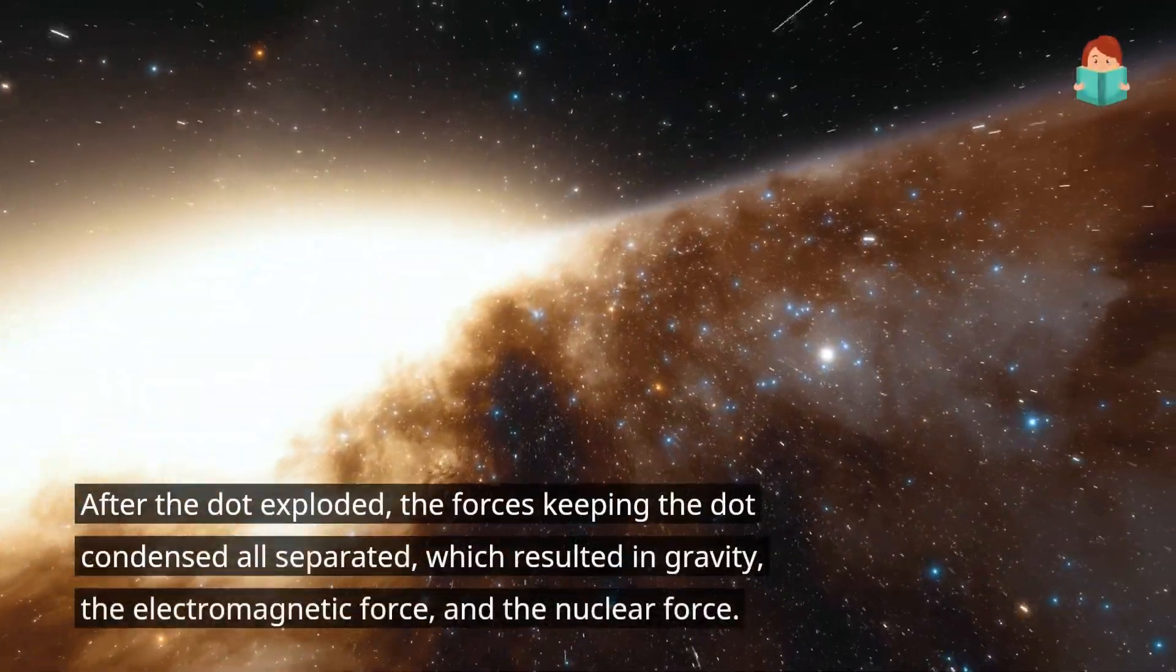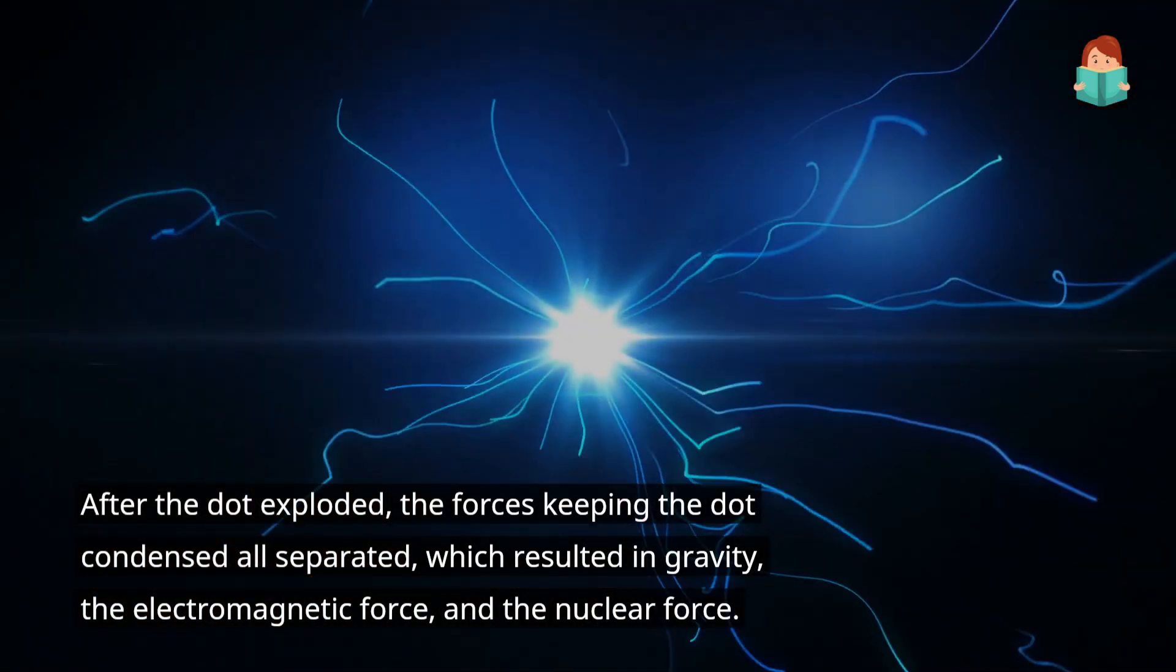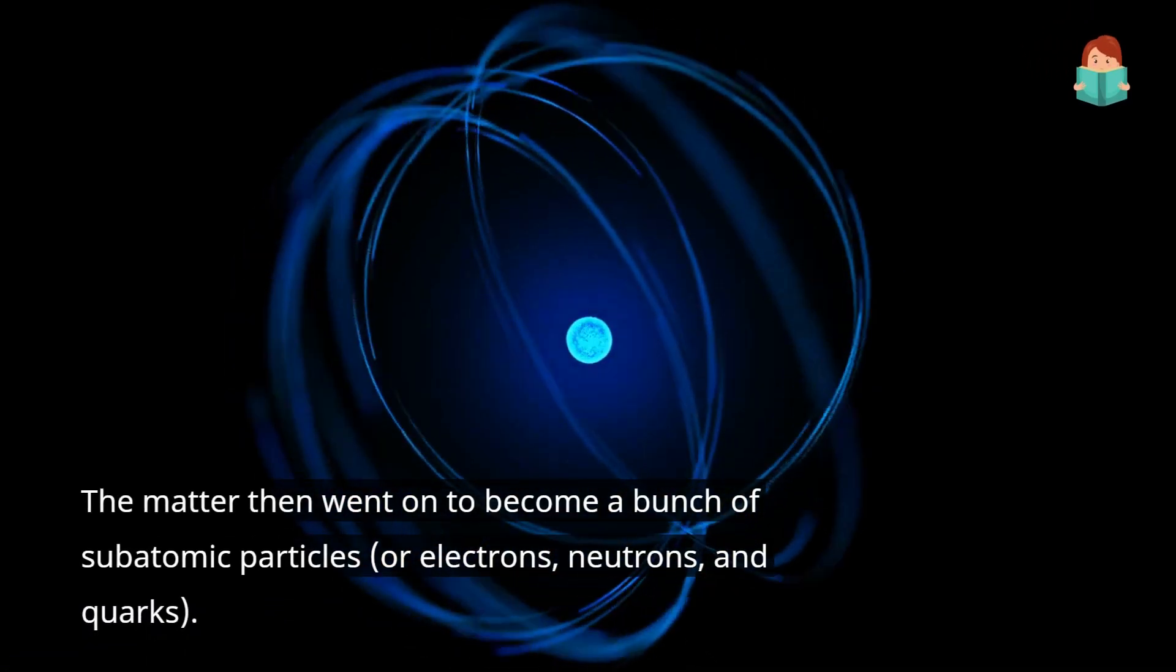After the dot exploded, the forces keeping the dot condensed all separated, which resulted in gravity, the electromagnetic force, and the nuclear force. The matter then went on to become a bunch of subatomic particles, or electrons, neutrons, and quarks.